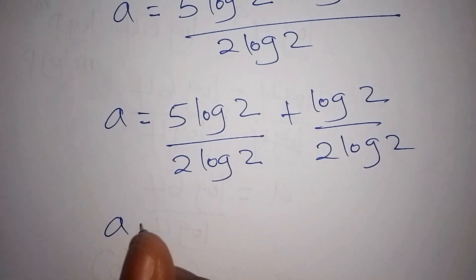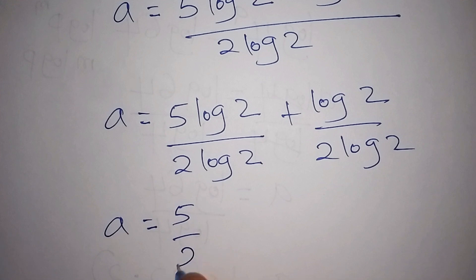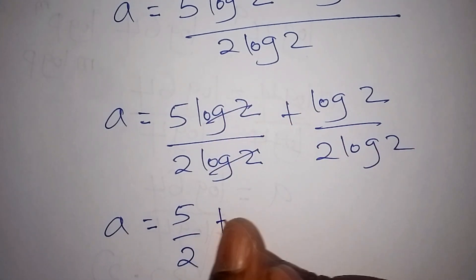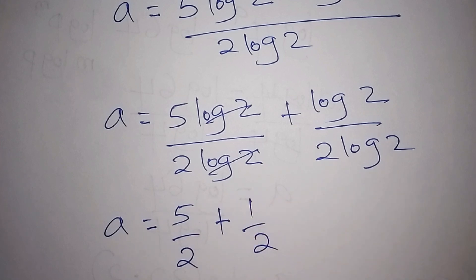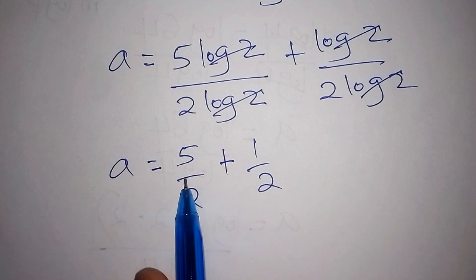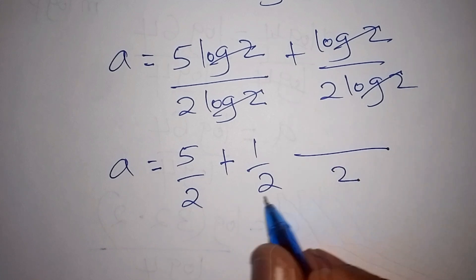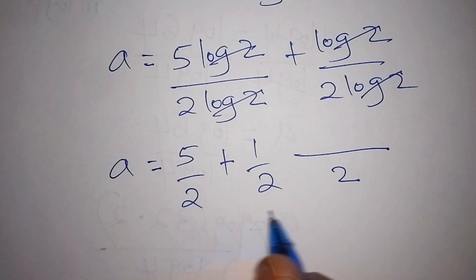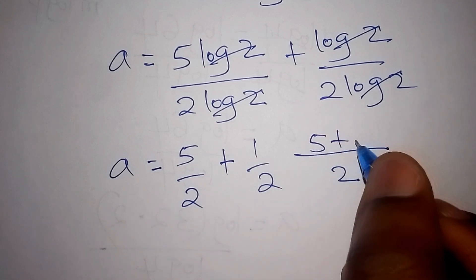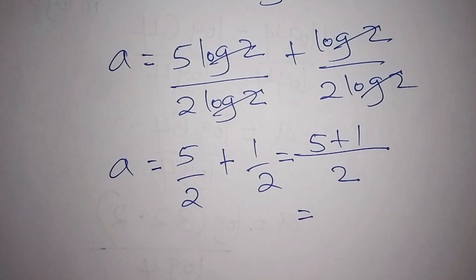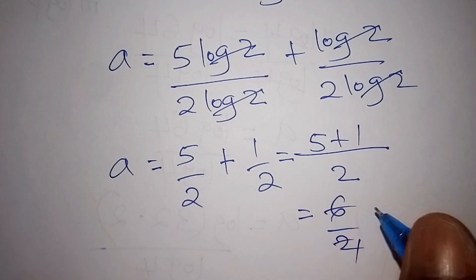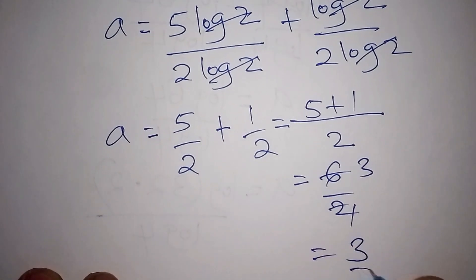Simplifying, log 2 cancels in each term: 5 log 2 over 2 log 2 gives 5 over 2, and log 2 over 2 log 2 gives 1 over 2. So a equals 5 over 2 plus 1 over 2. Finding the common denominator of 2, we get 5 plus 1 over 2, which is 6 over 2, and 6 divided by 2 equals 3. So our final answer is a equals 3.